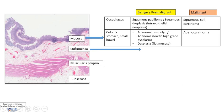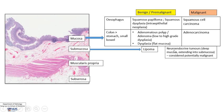Moving on, the next layer is the submucosa. There are not so many tumors that can arise here. A benign tumor example would be a lipoma, a benign tumor made up of fatty tissue, which appears as a protruding bump on endoscopy. There are also neuroendocrine tumors. These are epithelial in origin, originating from the deeper part of the mucosa, but because they're quite deep they extend into the submucosa and tend to look as if they are rising there. Neuroendocrine tumors are considered potentially malignant because they can metastasize, especially to lymph nodes and the liver.